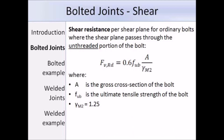This check is for when the shear plane passes through the unthreaded portion of the bolt. The equation is 0.6 times Fub times A over gamma M2. It is the same as the previous equation except that alpha V is replaced by 0.6, and As is replaced with A, which is the gross cross-section of the bolt. Fub is the ultimate tensile strength from Table 3.1 in Eurocode 3 Part 1-8, and gamma M2 is 1.25.